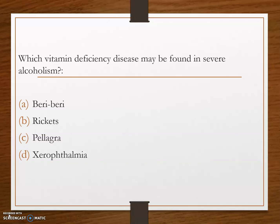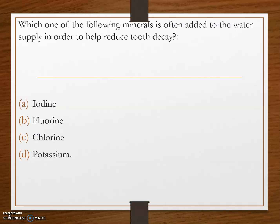Next question: which vitamin deficiency disease may be found in severe alcoholism? Option A, beriberi; option B, rickets; option C, pellagra; and option D, xerophthalmia. The answer is xerophthalmia. Xerophthalmia is a deficiency disease found in severe alcoholism because it is due to the deficiency of vitamin A. Xerophthalmia is a condition of extreme dryness of the eyes.